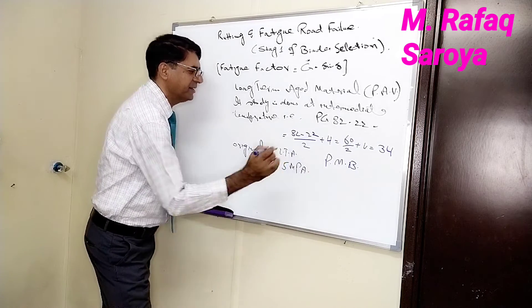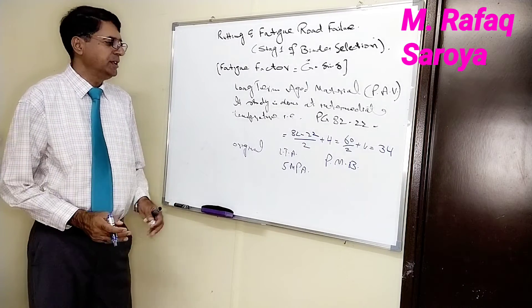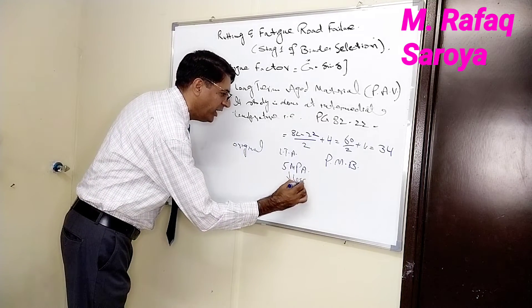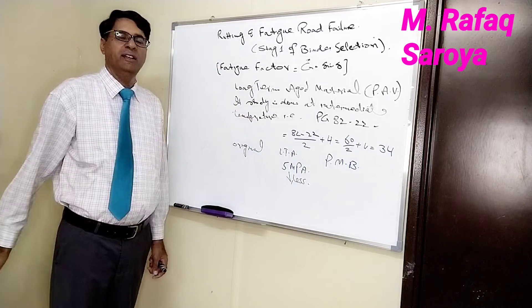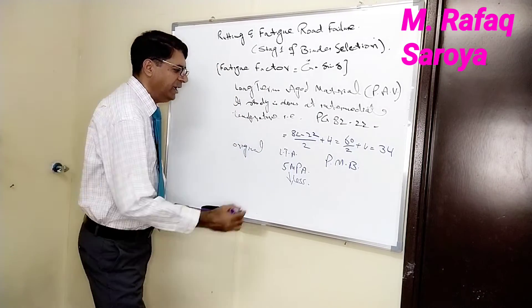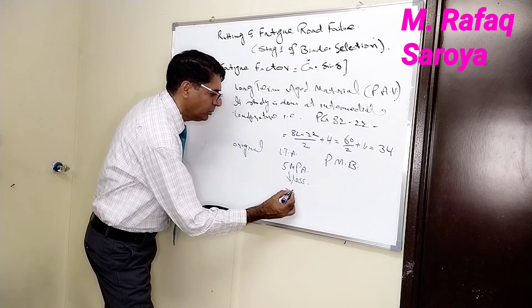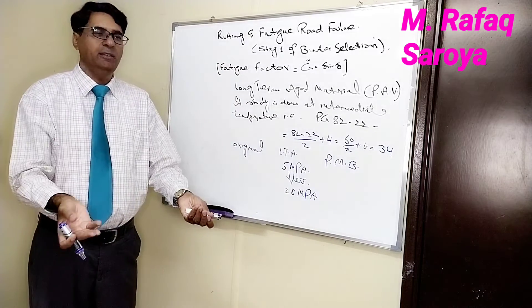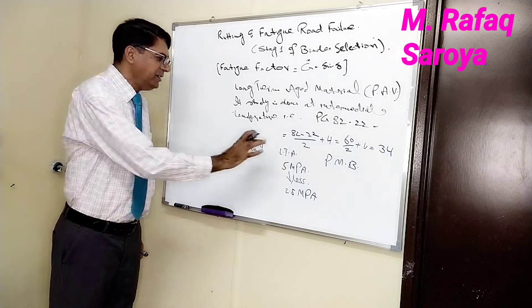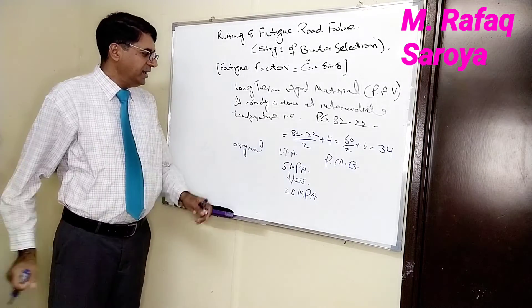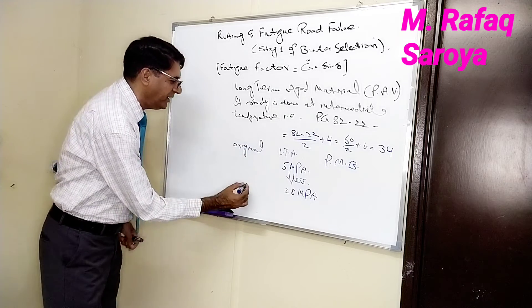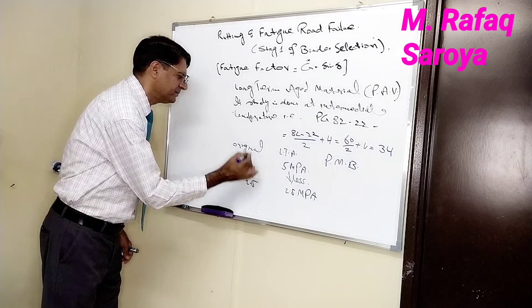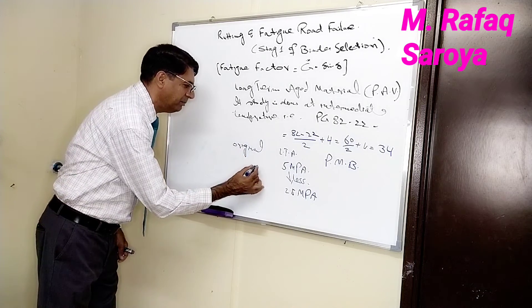The value should be less than 5 MPa. When I tested the long-term aged material, the value came out to be 2.5 MPa, which is acceptable. If the same test is performed on the original binder, the value will not be 2.5 — it will be more, maybe around 3.5 MPa, but it is still less than 5 MPa. This is just for your understanding.